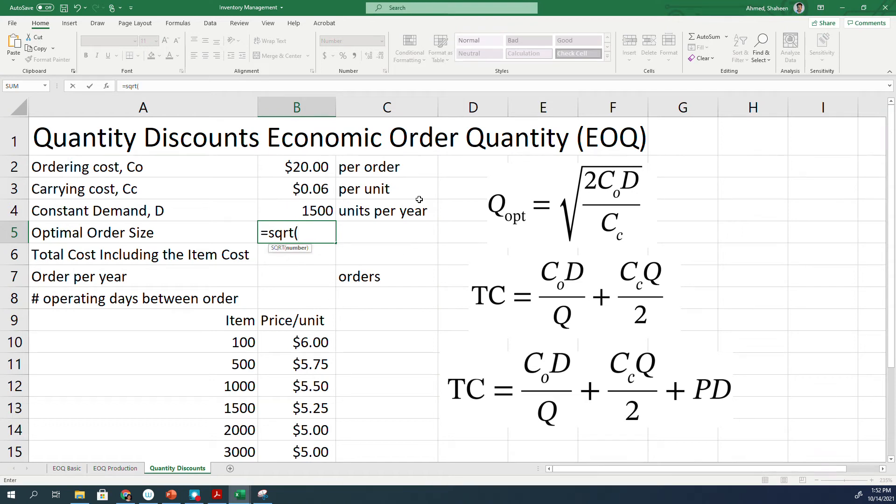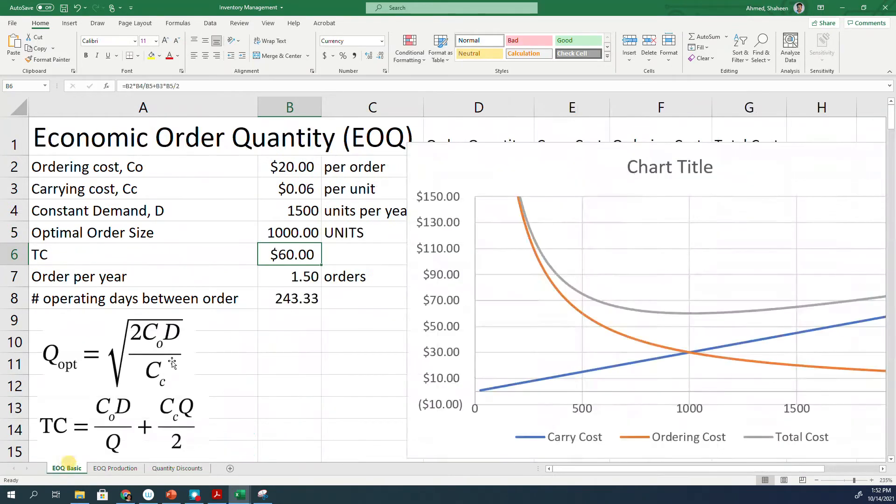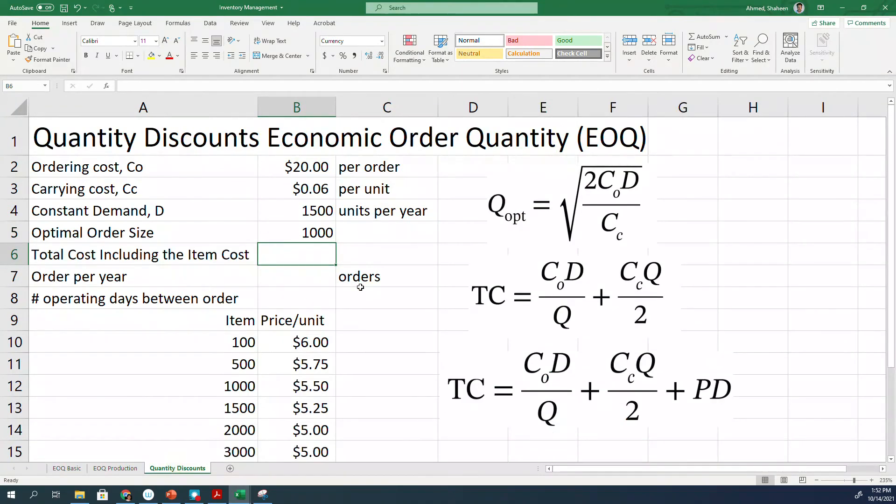It's square root of 2 times order cost times the demand divided by the carrying cost. So 1,000 units - we have found the same value before. Check that earlier video. We are using the same data set.